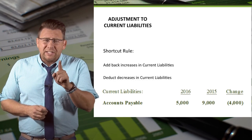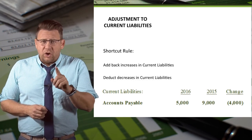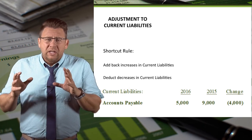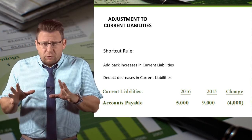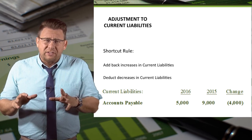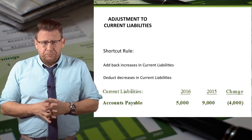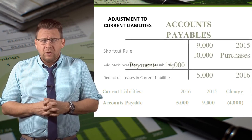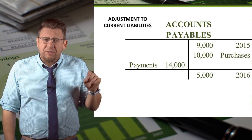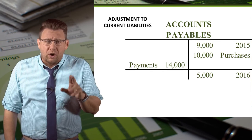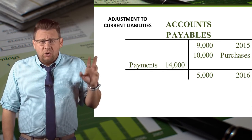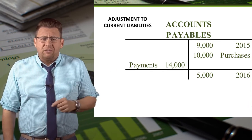Now let's do the same thing, only assume accounts payable decreases $4,000 from $9,000 to $5,000. Our cash payments must be $4,000 more than our expense in order for the account to balance.